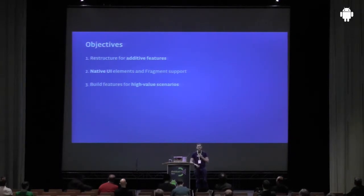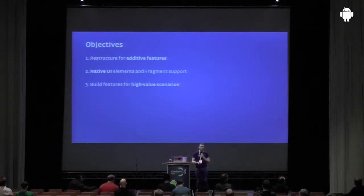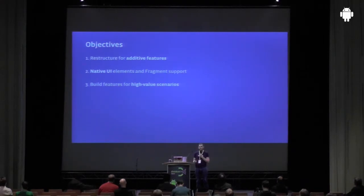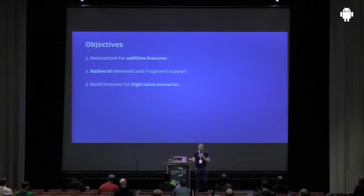They wanted to build features around high-value scenarios — things like deep linking, open graph actions, and doing like-share with app attribution, so that whenever new stories come into your news feed it shows 'like via this app.' These are the kind of high-value things that developers should be putting into the SDK. The SDK wasn't originally designed around this — it just became part of the use pattern — so the team wanted to make the SDK more usable for developers to do these things.